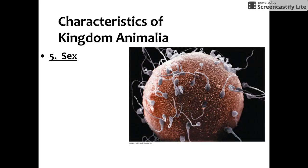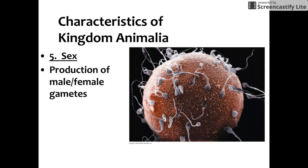Our fifth characteristic of animals is that they employ sexual reproduction, which by definition is the joining of the egg and sperm cells — what we call gametes. This also contributes to genetic variation. You can see from the photo that the egg cell is significantly larger than the sperm cell.